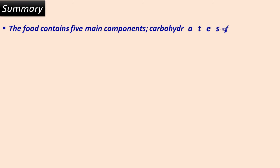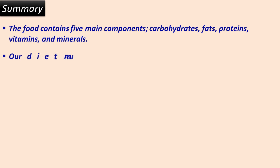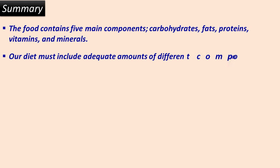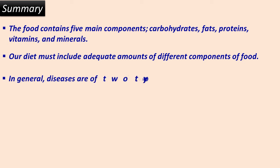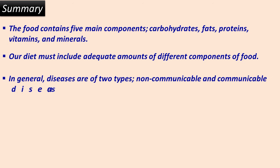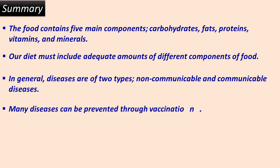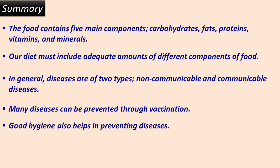Summary: Food contains five main components — carbohydrates, fats, proteins, vitamins, and minerals. Our diet must include adequate amounts of all these different components of food. In general, diseases are of two types: non-communicable and communicable. Many diseases can be prevented through vaccination, and good hygiene also helps in preventing diseases.